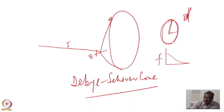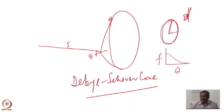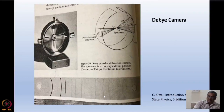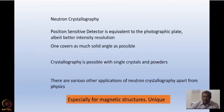So at large angle we have lesser intensity because of the form factor, structure remaining the same. We see the same circles — same Debye-Scherrer cones — but with lower intensity. When we do X-ray diffraction, we do exactly the same thing with neutrons. In neutron crystallography, a position-sensitive detector is equivalent to the photographic plate — only the size dictates how much of the cone you are intercepting, but they have better intensity resolution.